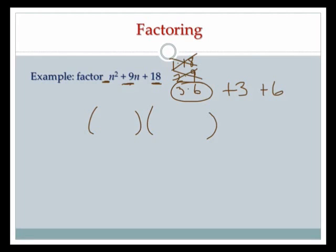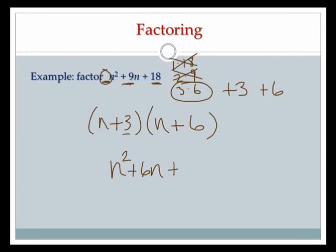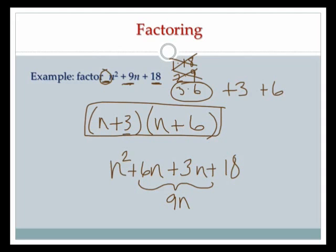I'll open up two sets of parentheses and put my variable in front of each. I bring both numbers into the parentheses. Since the leading coefficient is 1, dividing by 1 doesn't change anything, so no further steps needed. Checking by FOIL: n times n is n squared; n times 6 is 6n; 3 times n is 3n; 3 times 6 is 18. And 6n plus 3n is 9n. So I get n squared plus 9n plus 18, which matches. Final answer: n plus 3 times n plus 6.